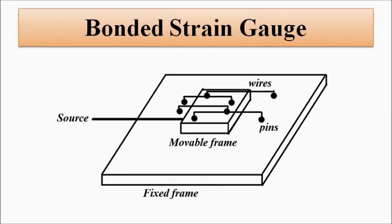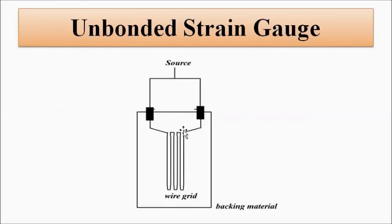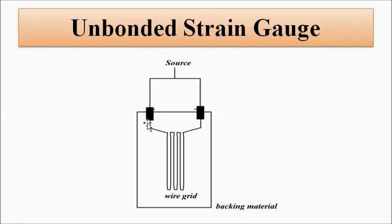The unbonded strain gauge also forms a similar setup. Again, a base material — called the backing material, such as cardboard or paper — is used, and on that a wire grid is formed, fixed with the help of a pin setup, and that is connected to the source.